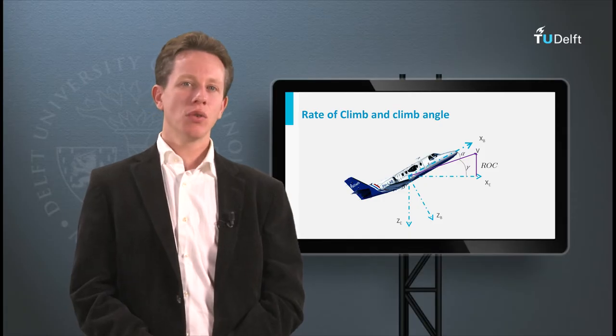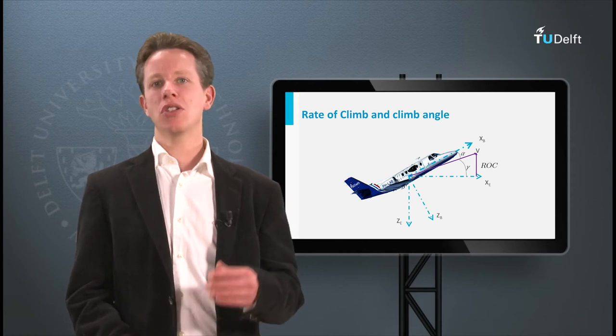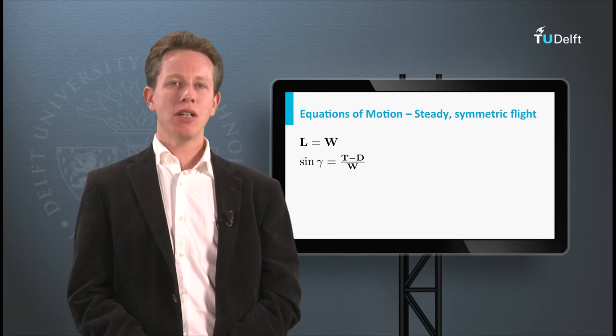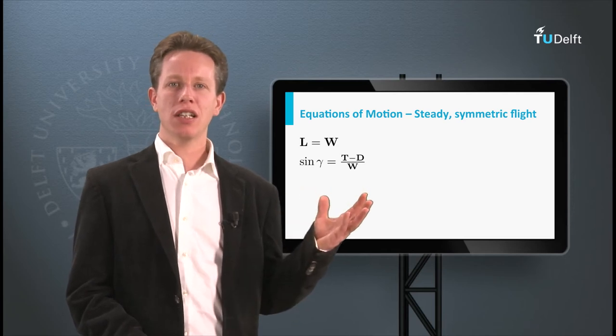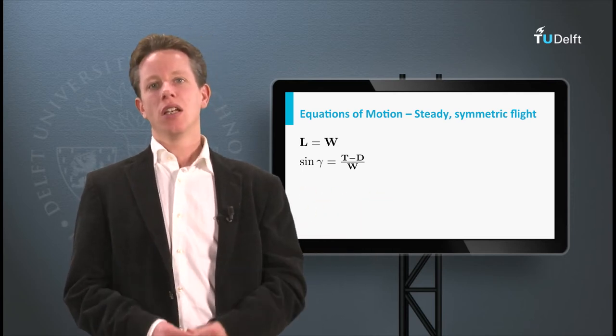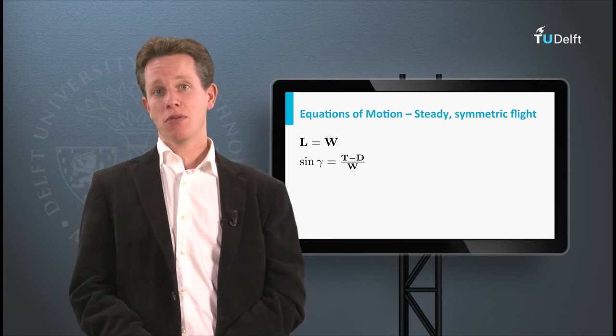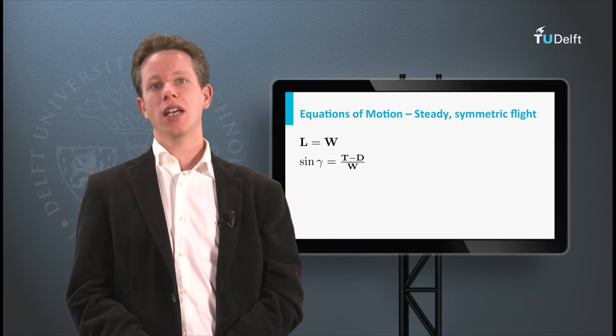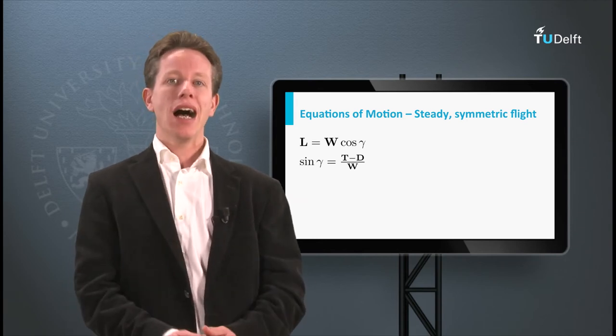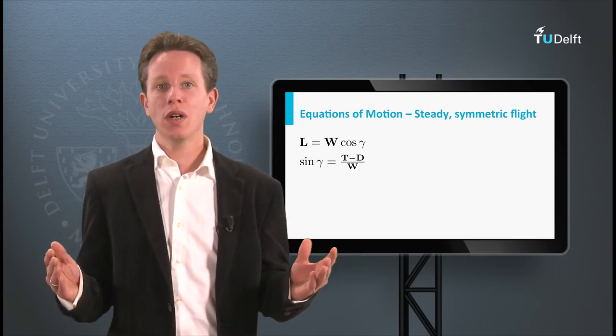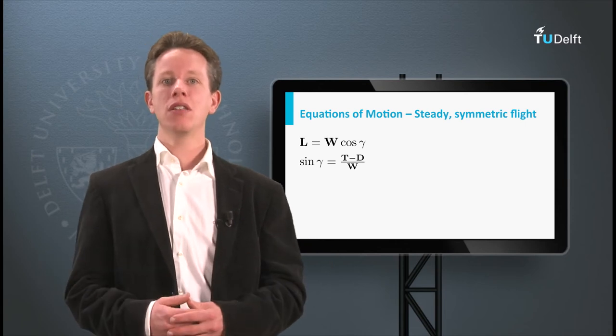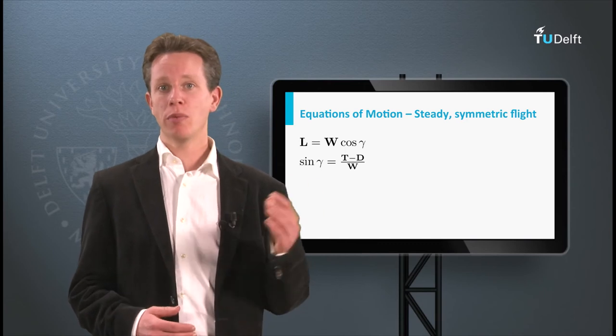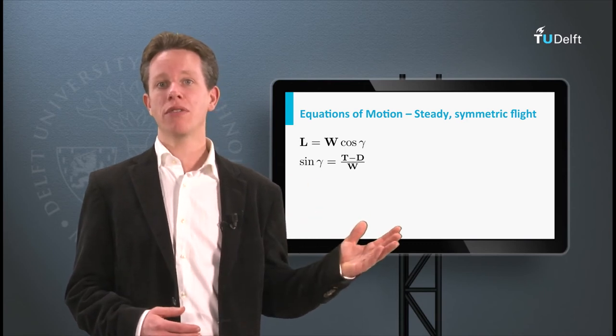In order to perform the calculations, you require the equations of motion for steady symmetric flight. It may be confusing in these equations to see lift is equal to weight here. The full equation for steady symmetric flight perpendicular to the airspeed vector actually has a cosine gamma term as well. However, since the angles are always quite small, less than 20 degrees, the cosine term in fact approaches one, and thus we remove it from the equation to make our life a bit easier.